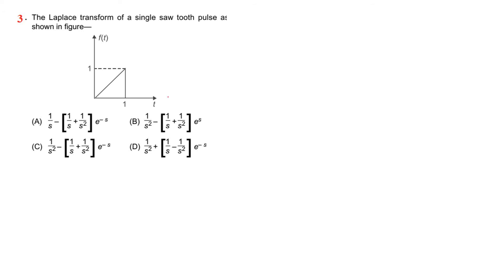Next, problem number 3. The Laplace transform of the single short tooth pulse as shown. See, this is the ramp signal. What is step number 1? What are the points the signal changes occur? Here is point 0 and this is 1. The slope is 0, then 1 by 1 — this is plus 1 slope. And next, the slope becomes 0 again. So this signal waveform consists of 2 ramp signals and 1 step signal.